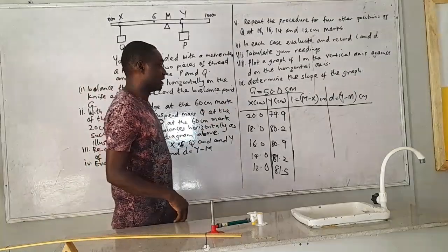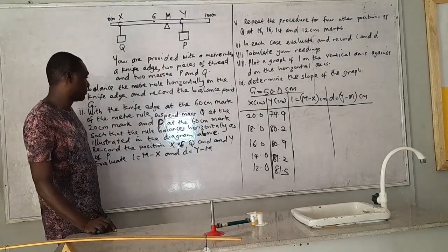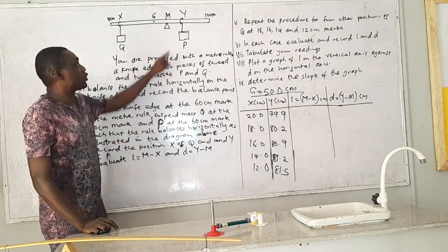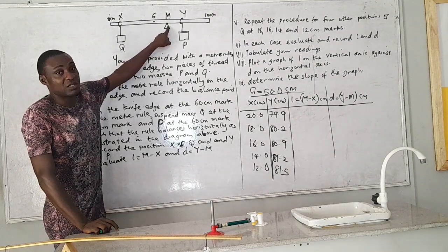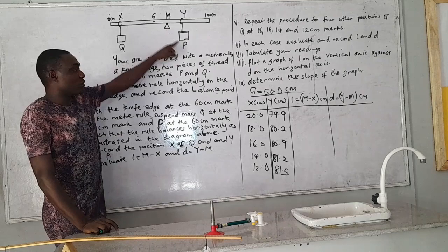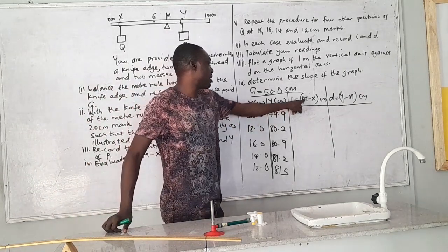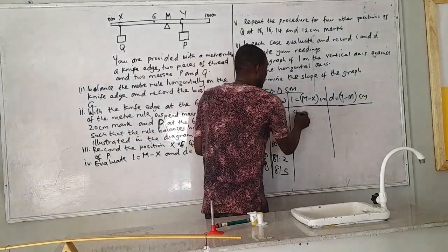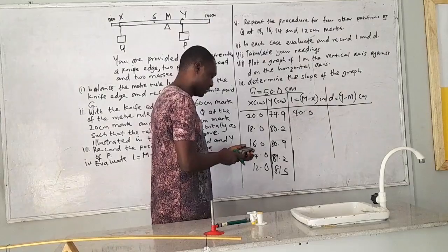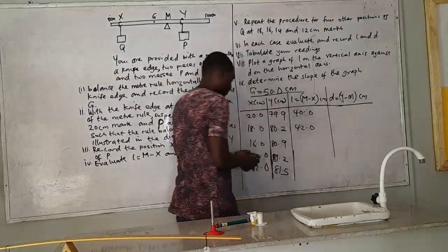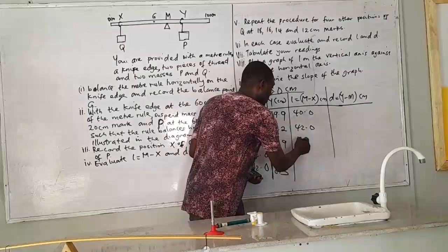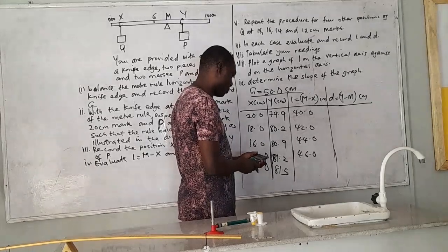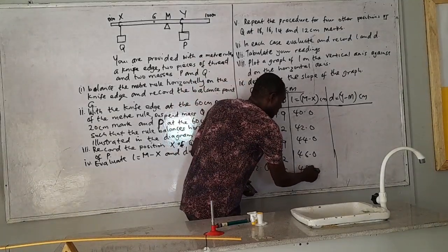So we can now take the evaluation. We are asked to evaluate N equals M minus X. The position M is 60. Remember that we place this permanently on 60. So this is going to be M minus X. 60 minus 20, 40.0. 60 minus 18, 42.0. 60 minus 16, 44.0. 60 minus 14, 46.0. And then 60 minus 12 is equal to 48.0.